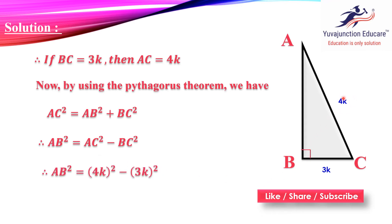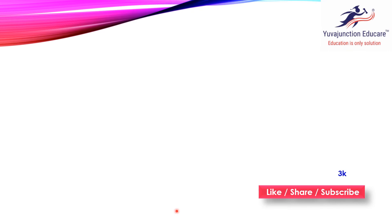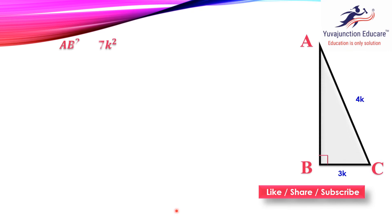Substituting the values: AB² = (4k)² − (3k)². 4k squared is 16k² and 3k squared is 9k². So AB² = 16k² − 9k². 16 minus 9 is 7, so AB² = 7k².